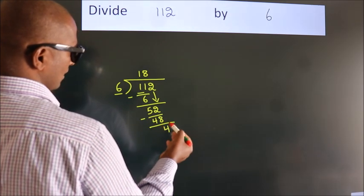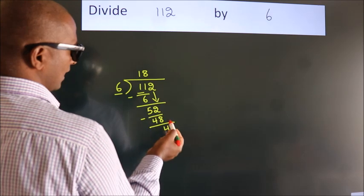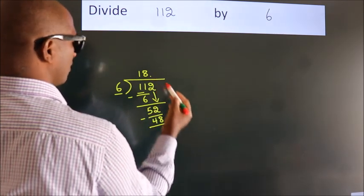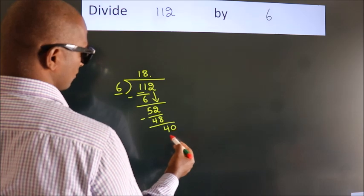After this, no more numbers to bring down. So what we do is, we put a dot, take 0. So 40.